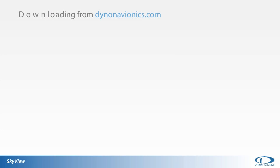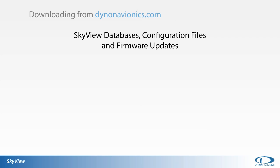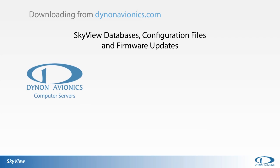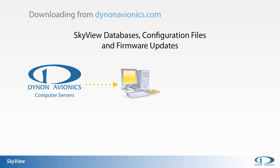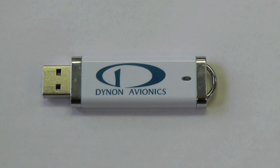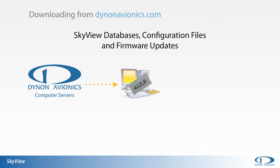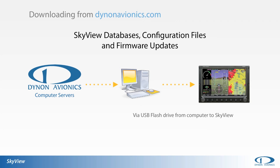Uploading databases, configuration files, and firmware updates to your Skyview system is a two-step process. Updates must first be downloaded from Dynon Avionics' servers at dynonavionics.com and saved to your home computer or laptop — this can be accomplished on either a PC or a Mac. Update files are then copied to a USB drive, commonly referred to as a USB or memory stick, which is then plugged into the Skyview system for uploading.